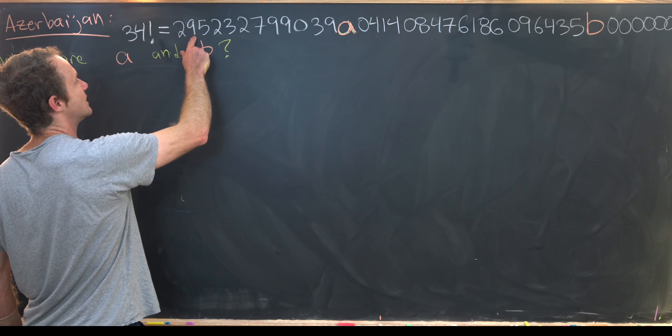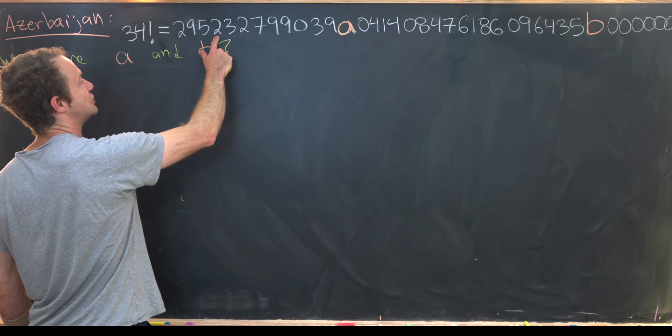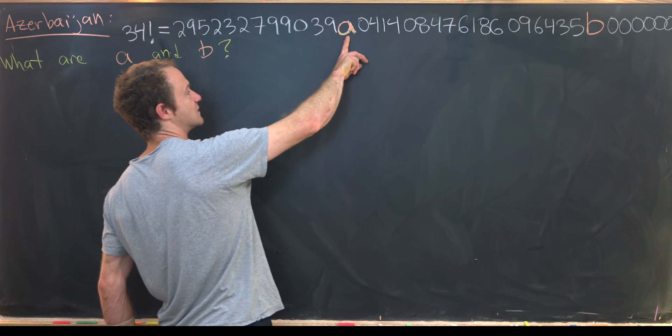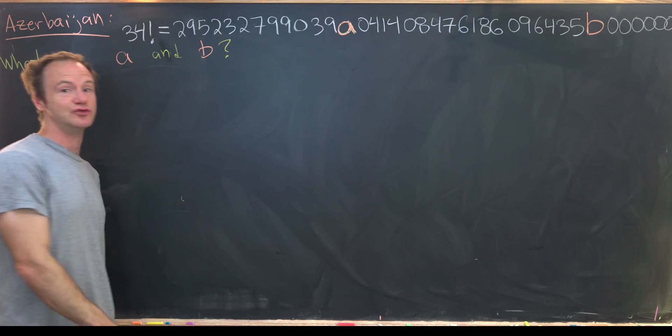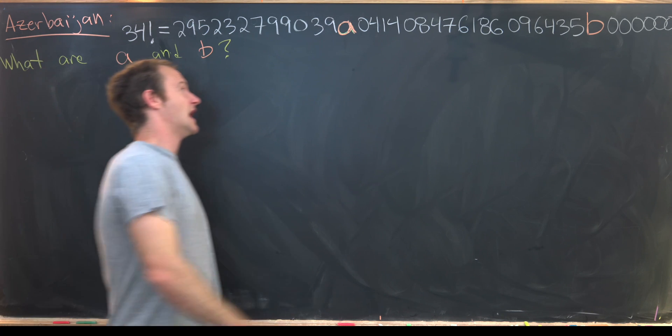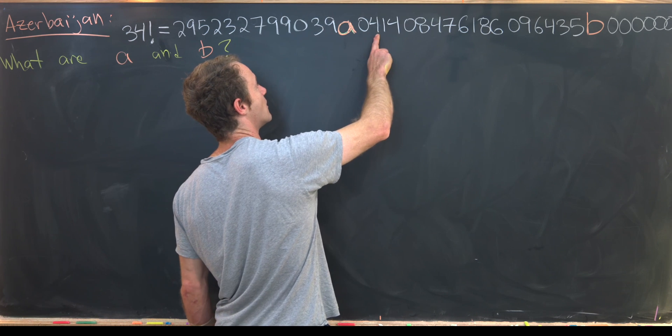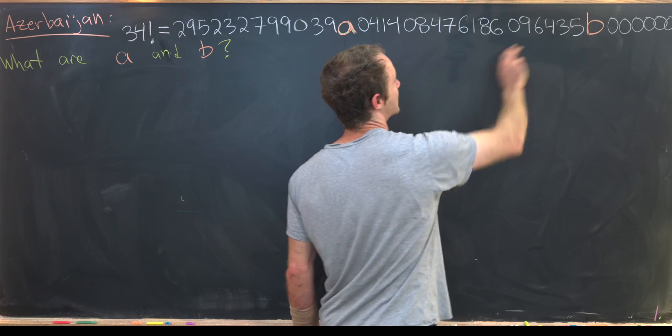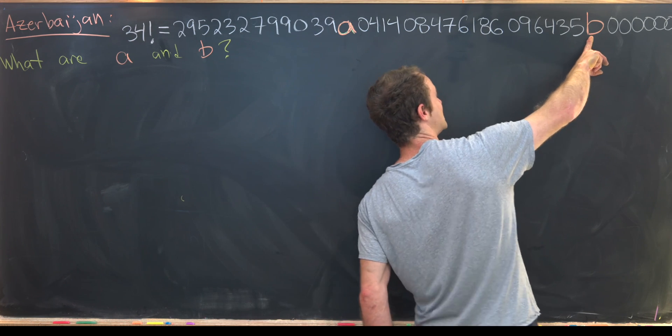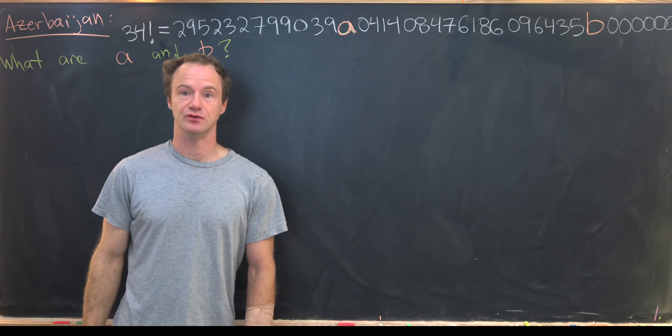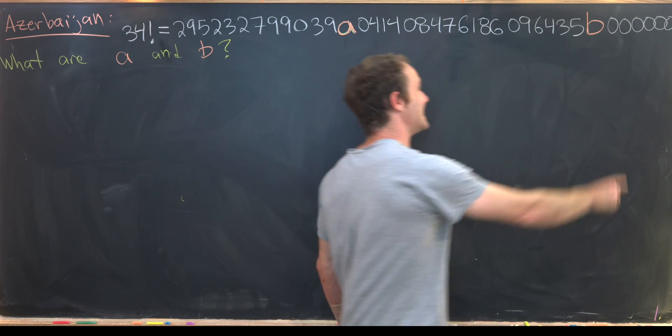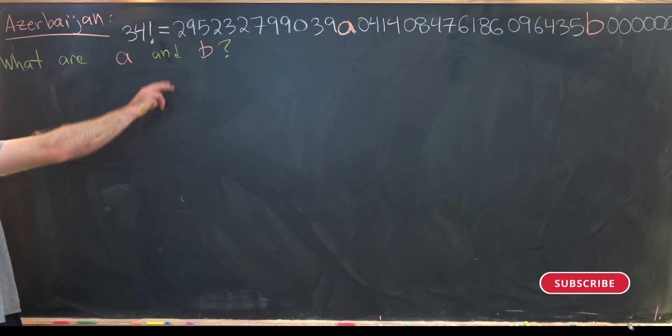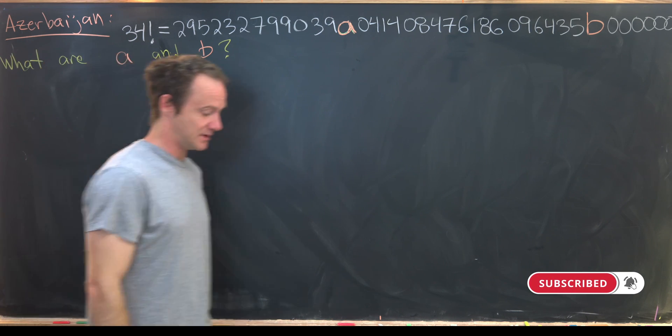So it starts 295232. There's a bunch more numbers. Then there's this digit A, which we do not know at the moment. And then it continues 041408, continuing with a bunch more numbers to a digit B that we also do not know. And then it ends in seven zeros. And our goal is to find the values of A and B.